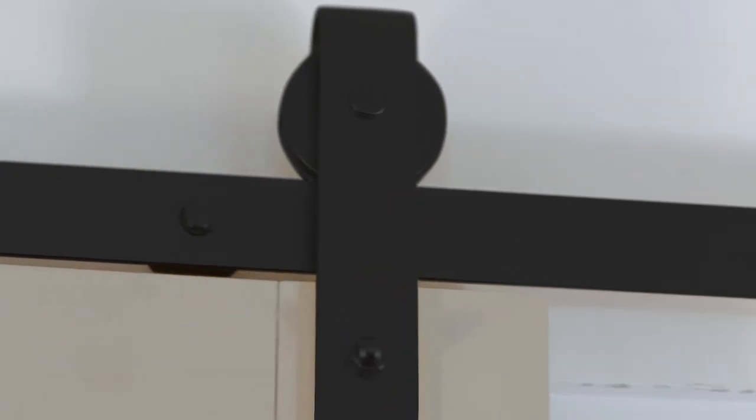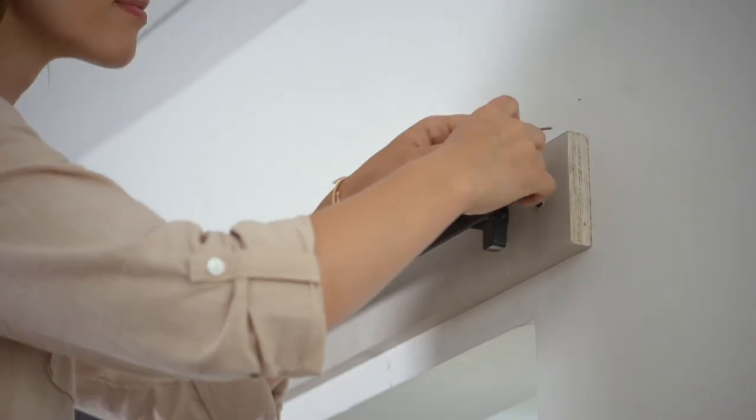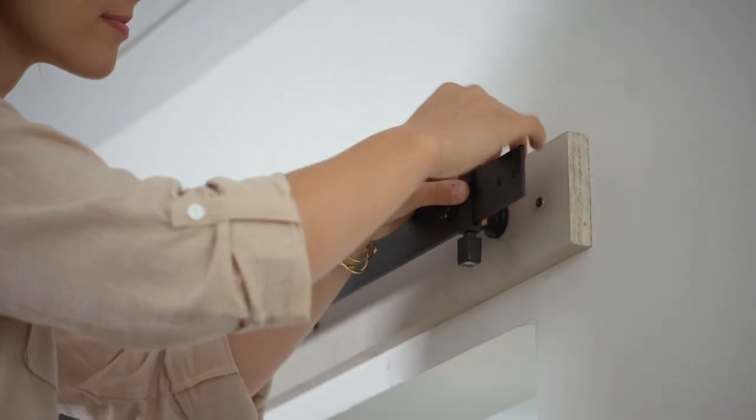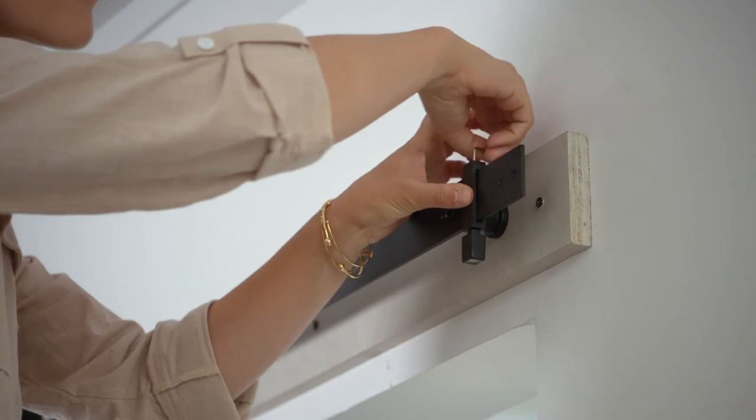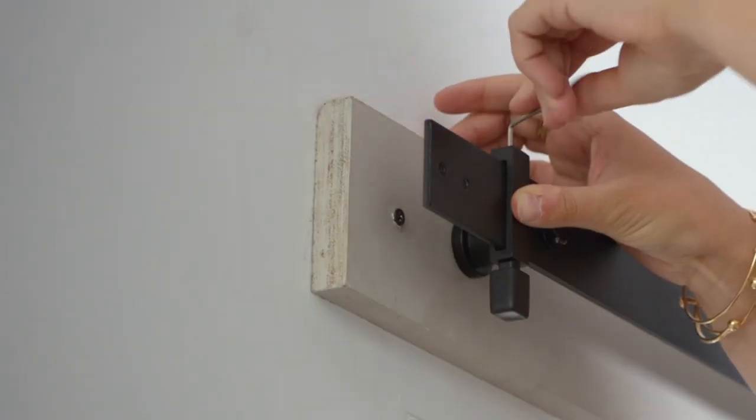Slide the door to the closed position. Slide the first door stop onto the track so it touches the door. Tighten the set screws to secure it in place and then do the same with the second door stop.